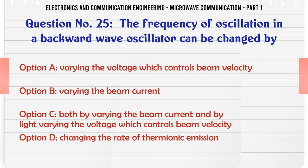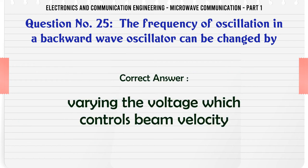The frequency of oscillation in a backward wave oscillator can be changed by: A. Varying the voltage which controls beam velocity, B. Varying the beam current, C. Both by varying the beam current and by varying the voltage which controls beam velocity, D. Changing the rate of thermic emission. The correct answer is Varying the voltage which controls beam velocity.